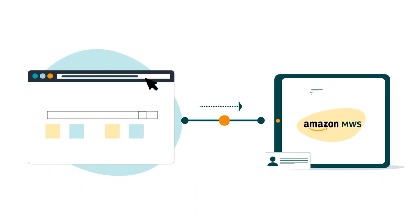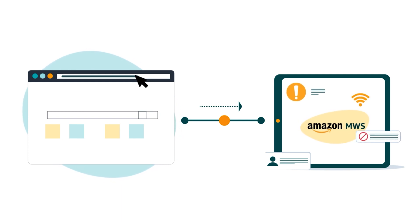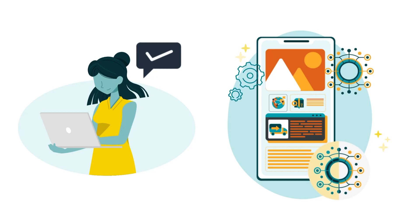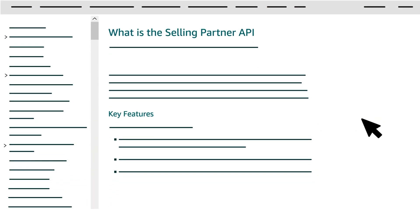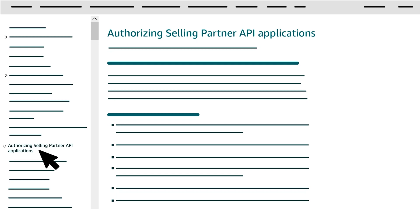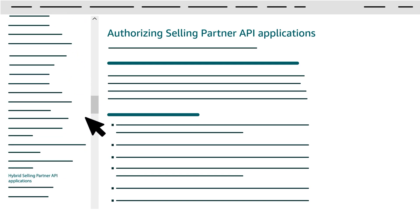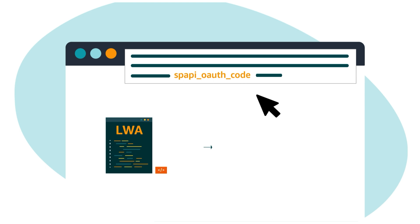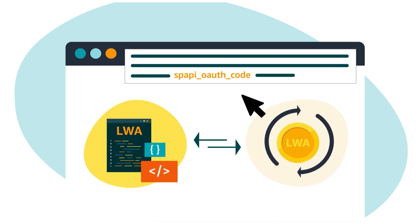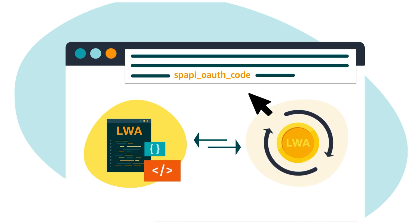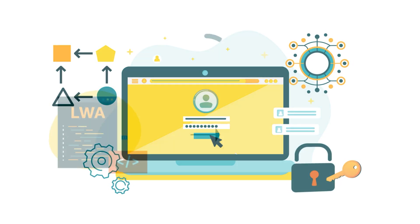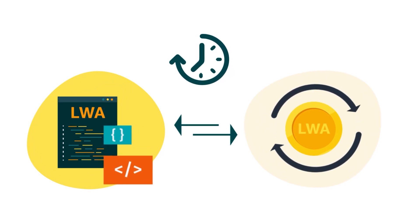MWS Auth Token is the value you use when you create a query string for a call to MWS, and is only passed when the Selling Partner is authorizing a hybrid SP API application. For more information about hybrid applications, visit the SP API documentation website, click Authorizing Selling Partner API Applications in the table of contents, then click Hybrid Selling Partner API Applications. SP API OAuth Code is a Login with Amazon (LWA) Authorization Code that you'll exchange for an LWA Refresh Token in the next and final step of the website workflow authorization process. You'll want to complete that final step within 5 minutes before the code expires.